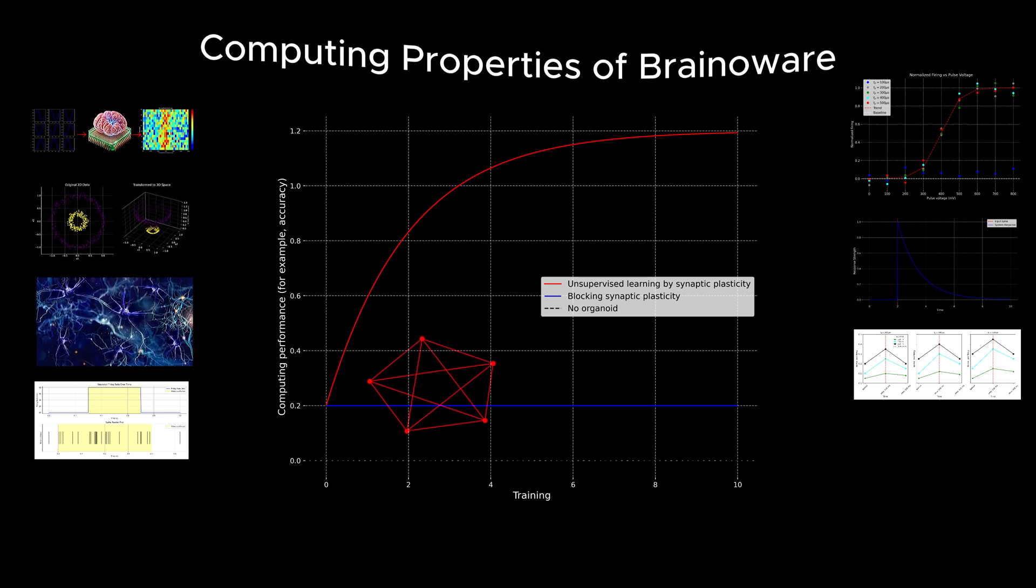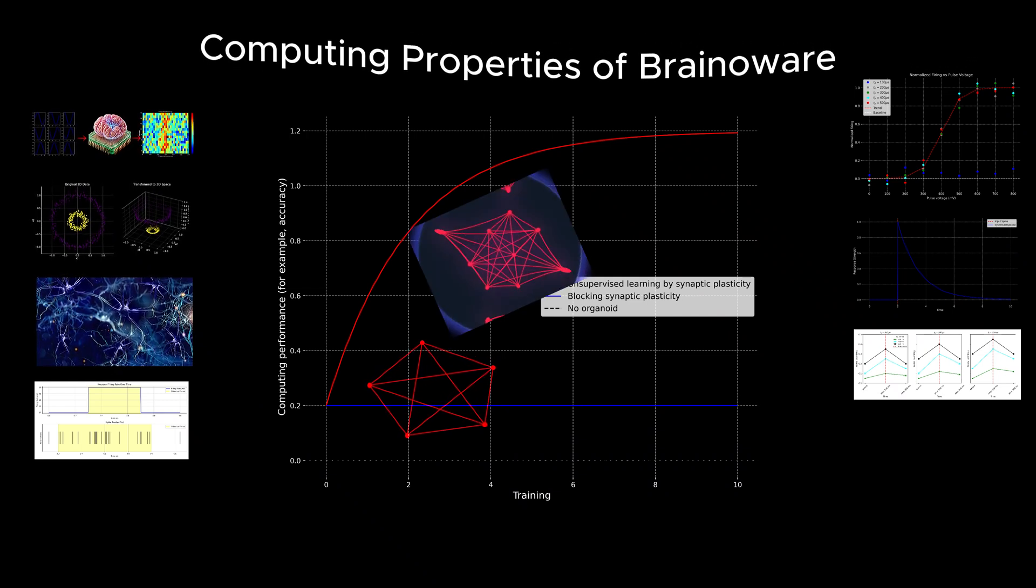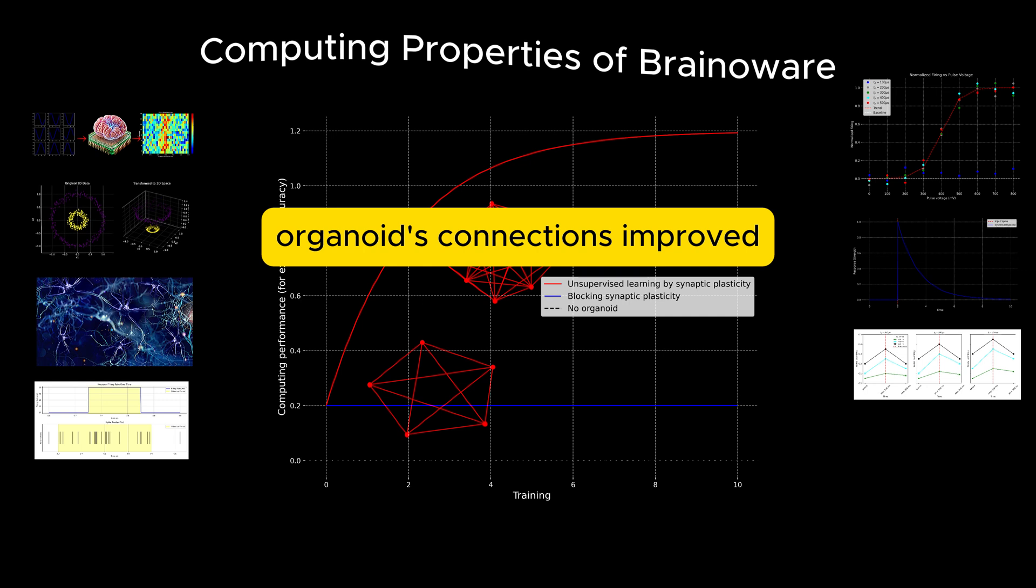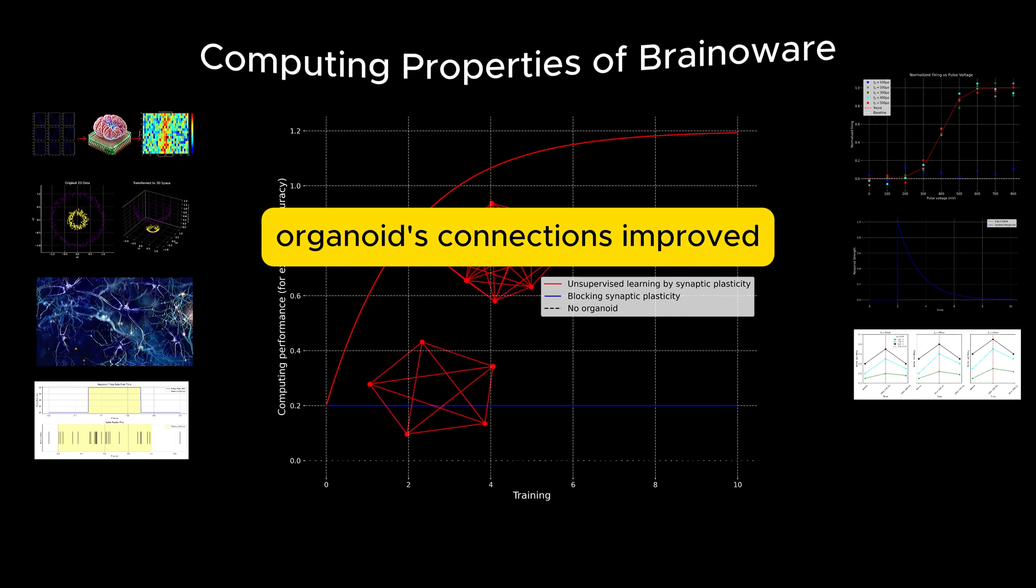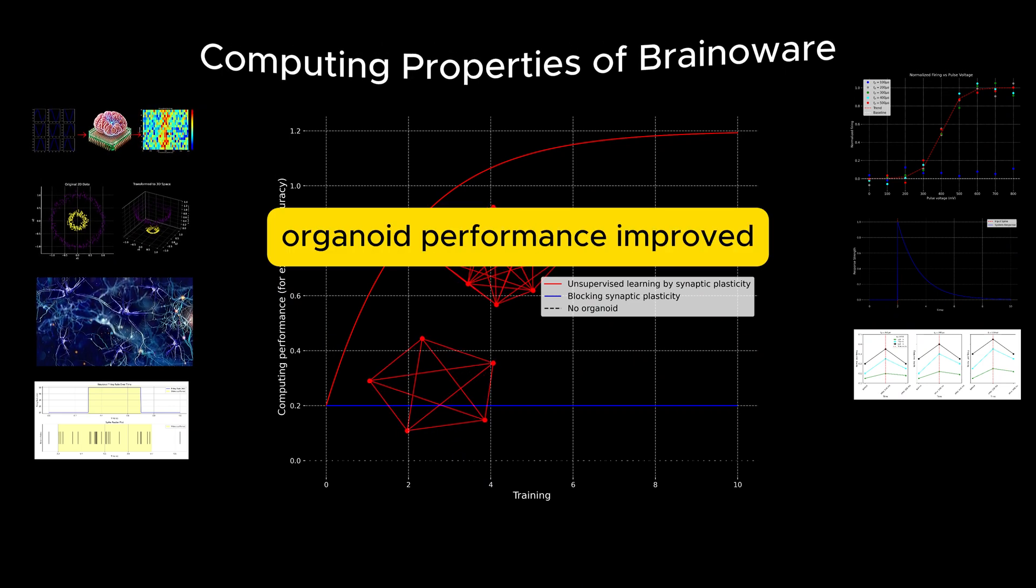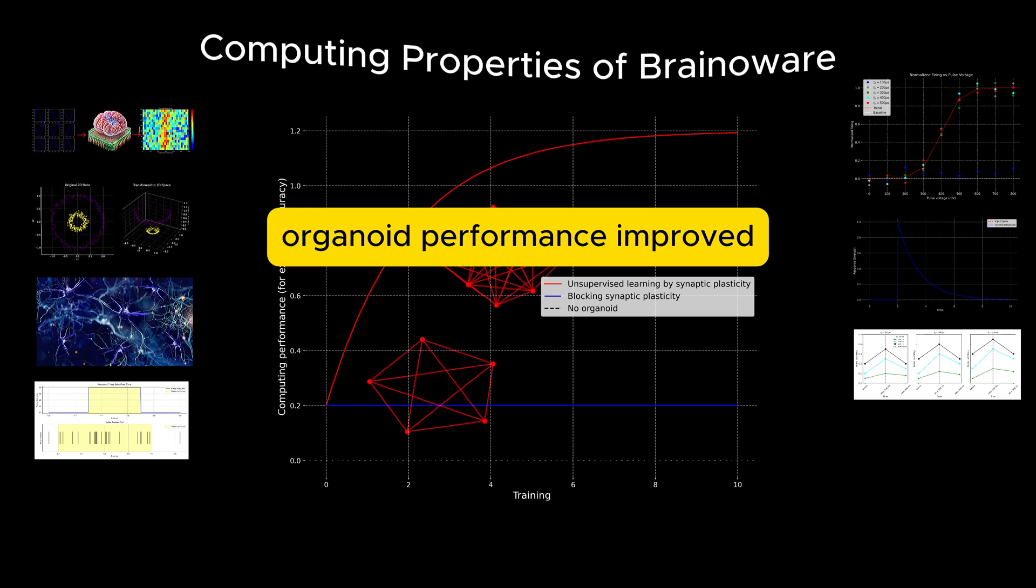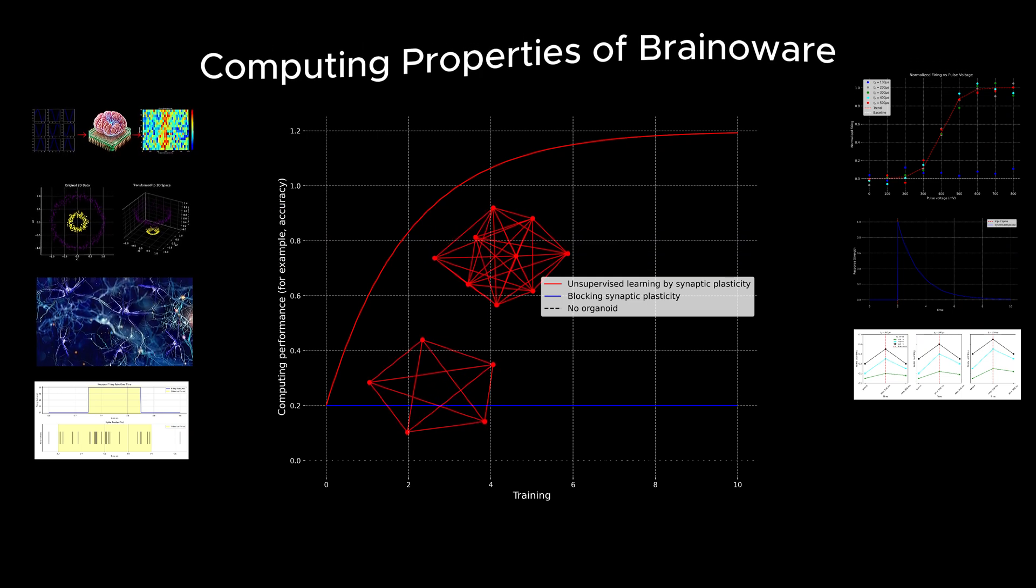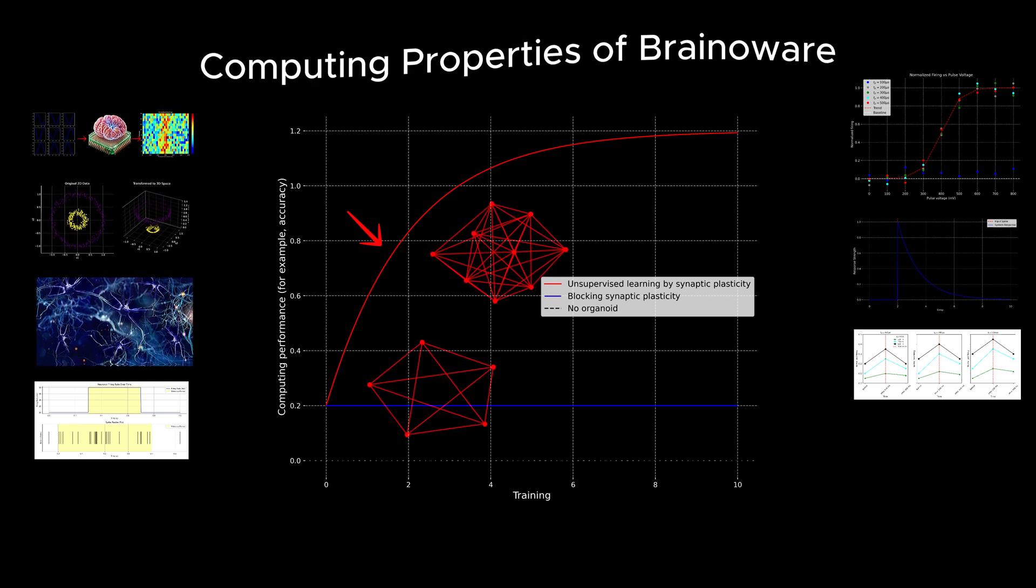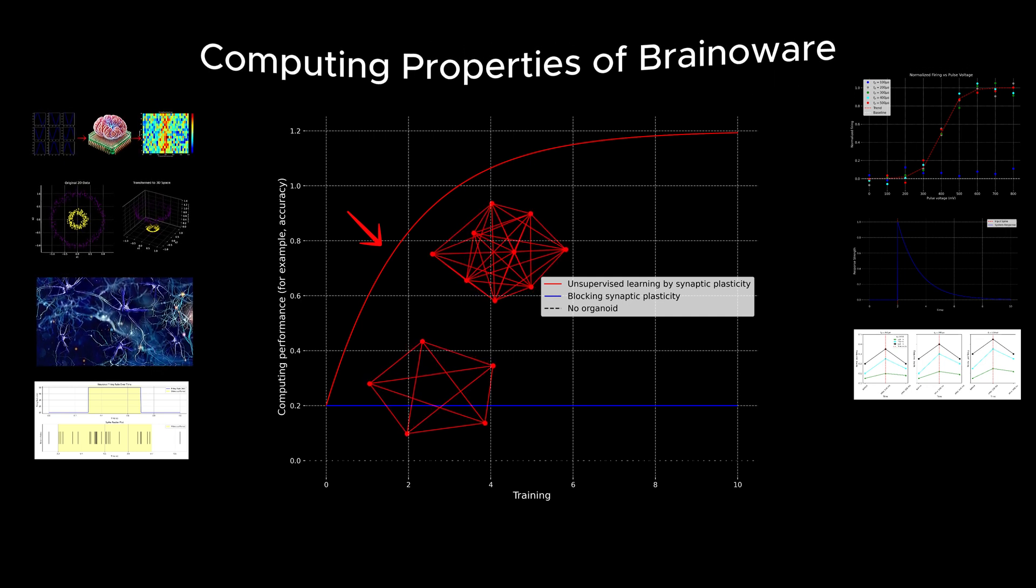To improve performance, the researchers trained the system by applying the same dataset repeatedly over several epochs, training cycles. This process leveraged unsupervised learning, a method where the system modifies its structure and connectivity in response to input patterns without explicit guidance. By reshaping its functional connectivity, adjusting the strength and number of connections between neurons, BrainAware adapted to the task. After four epochs of training over two days, BrainAware's accuracy in recognizing the vowels improved significantly to about 78%. This demonstrated the organoid's ability to learn and refine its responses based on exposure to data.